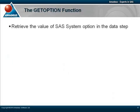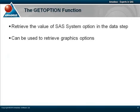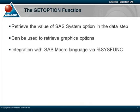An alternative approach would be to use the GetOption function, which can be used to retrieve the value of a SaaS system option and return it to a data step variable of our choice. Not only can it be used with our SaaS system options, it can also retrieve the values of graphics options which have been configured using the goptions statement. As with most other functions, the GetOption function can be used with %sysfunc, thus surfacing the function into macro language.